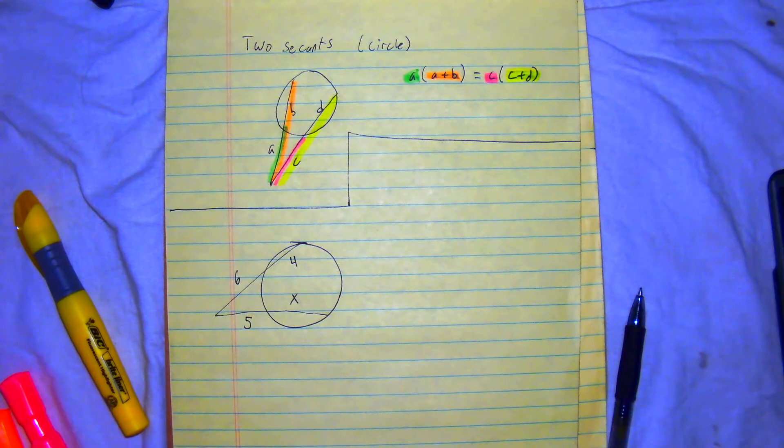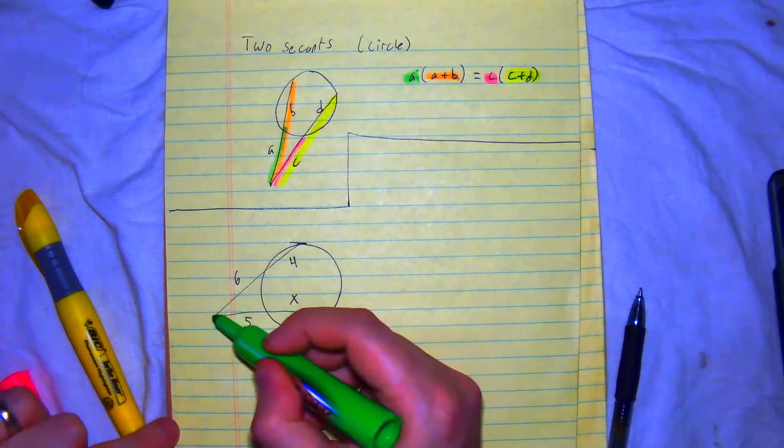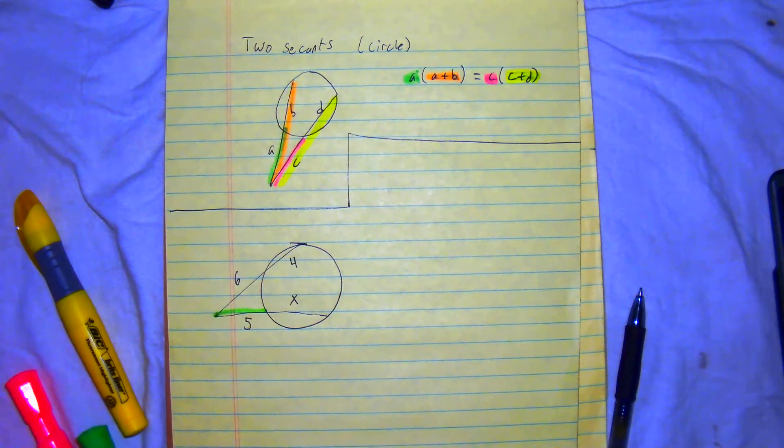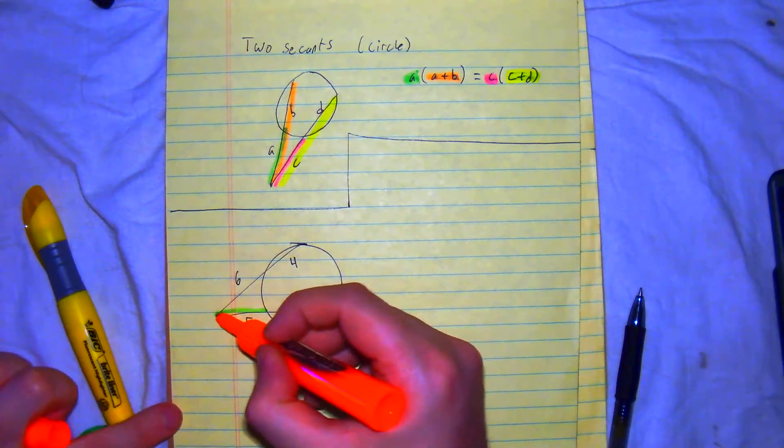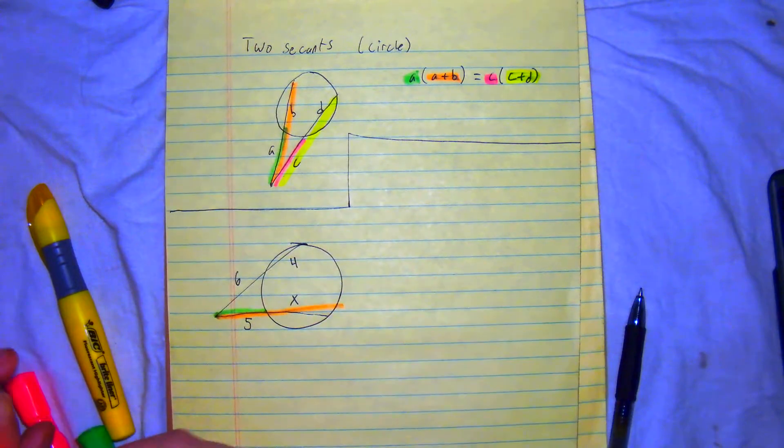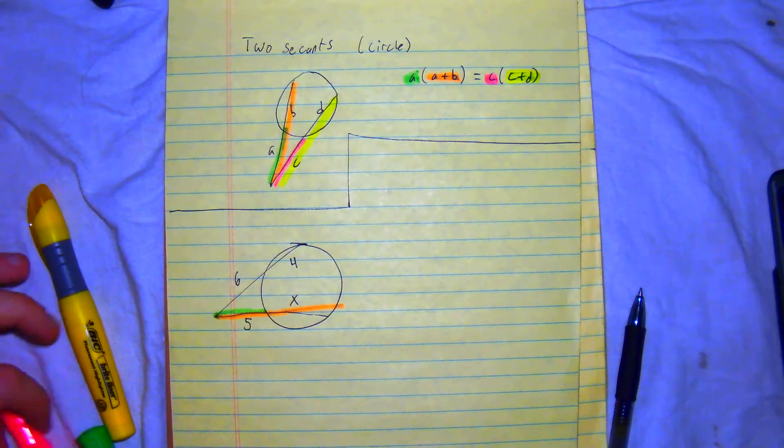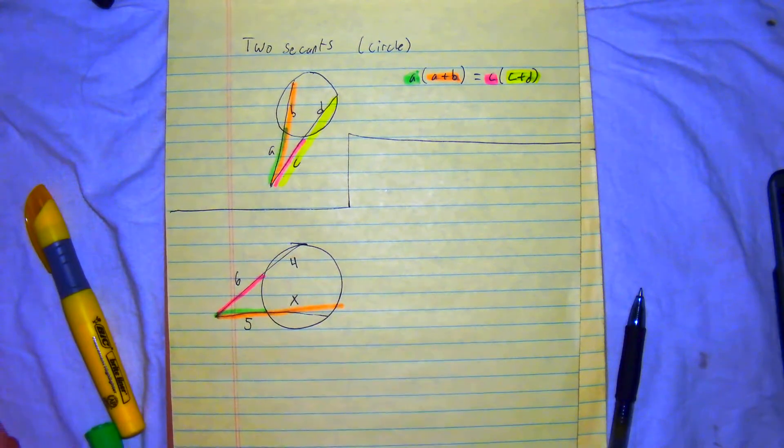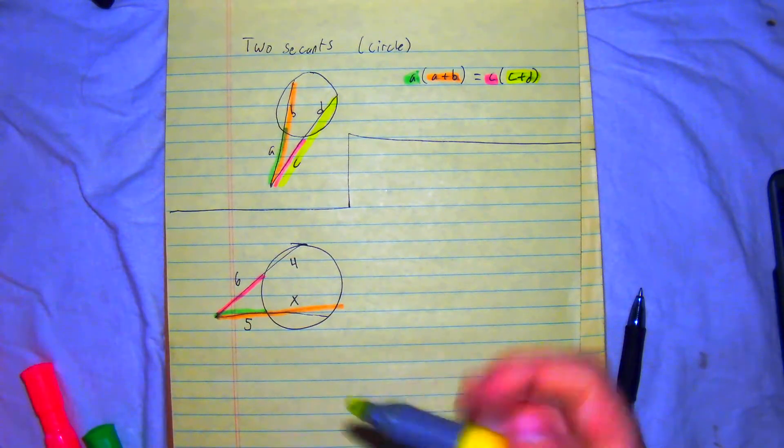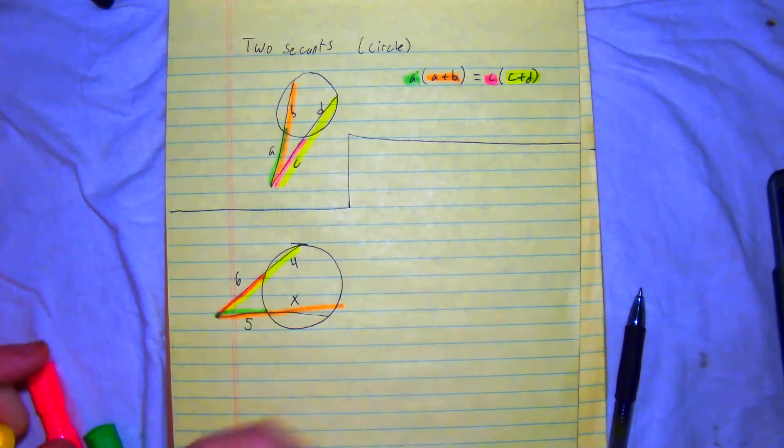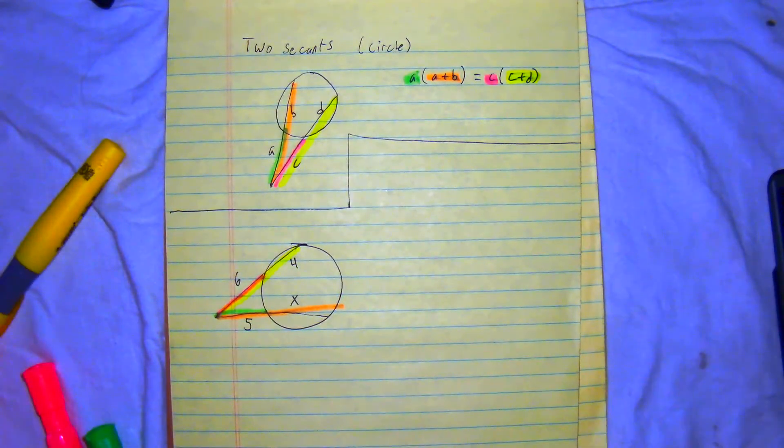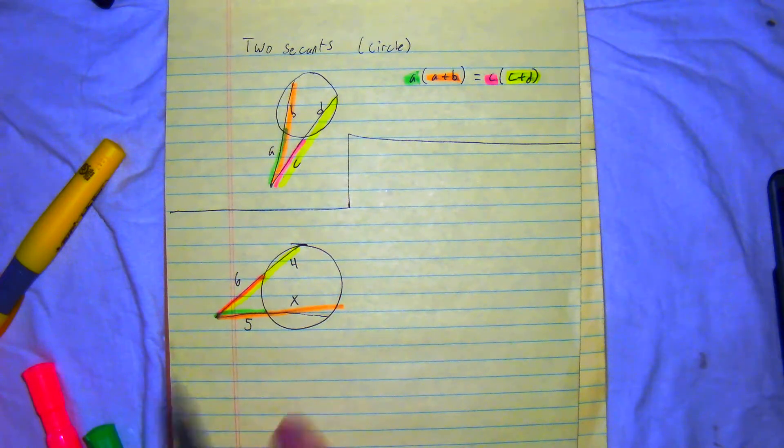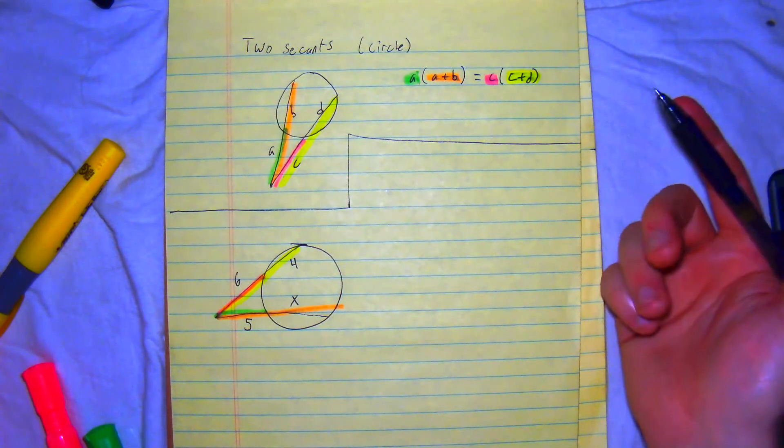So, I want to keep myself organized. So, I want to label it some colors. I'm going to do the outside with green, the full length orange. And then I'm going to do the outside pink, the full length yellow. All right. So, we definitely have 2 secants. Same endpoint. We're good to go here.